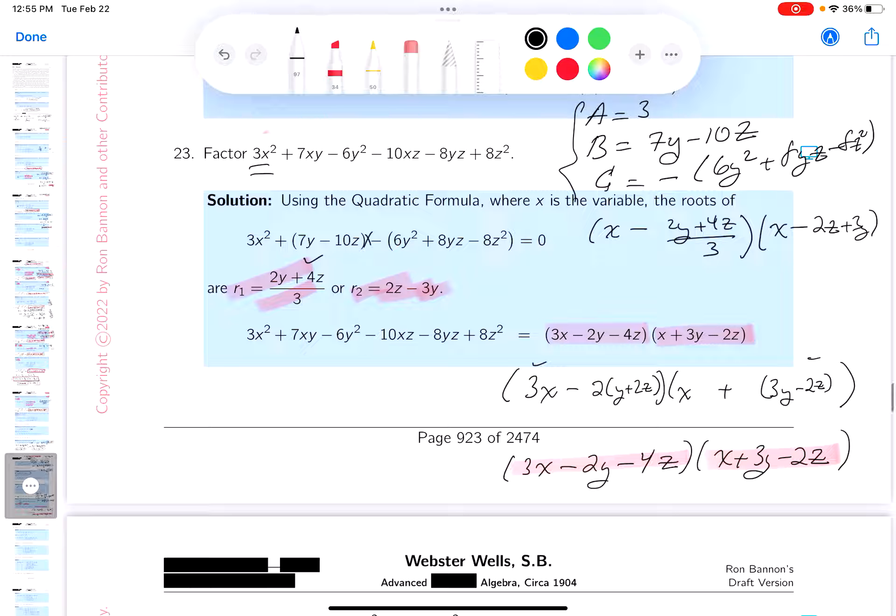What do you get? 3x minus 2y minus 4z and x minus 2z plus 3y. Do I get the correct answer? Let's take a look: x minus 2y minus 4z, x minus 2z plus 3y. A little bit different order but really the same thing, right? Both rows lead to the same answer. Thank you.